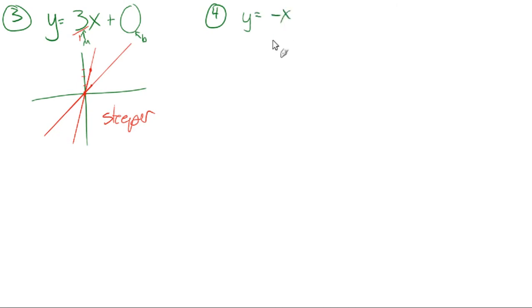Let's do number 4, y equals negative x. All right. So negative 1 times x plus 0. So the slope is negative 1 or negative 1 over 1, y intercept of 0. And there's our line.